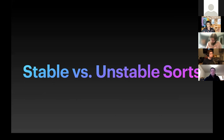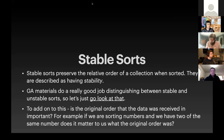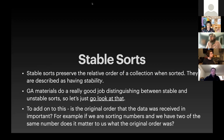The other factor we need to talk about is whether a sort is stable or unstable. Stable sorts preserve the relative order of a collection when they are sorted — they're described as having stability. The GA materials do a great job with that — the cards example. When you put all cards in order from ace to king, that's a base order. But if you're organizing them by suit, you want to keep them in number order and suit order at the same time. That would be preserving the stability of a sort.